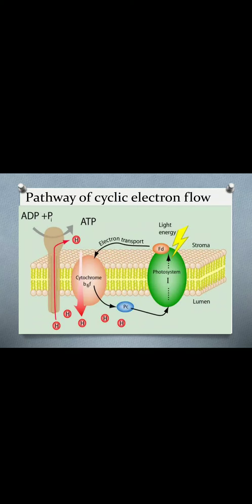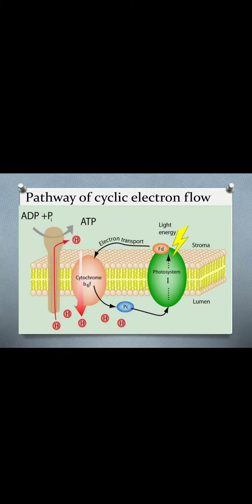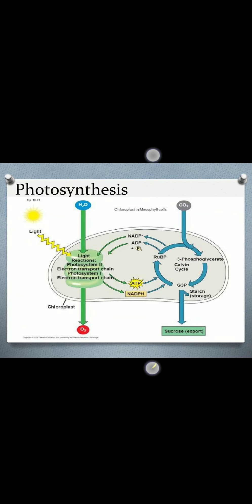To summarize, electrons move through chlorophyll molecules from photosystem II to photosystem I, generating a proton gradient responsible for the formation of NADPH and ATP. NADPH is produced via NADPH reductase. This completes the overview of how photosynthesis occurs inside plants.